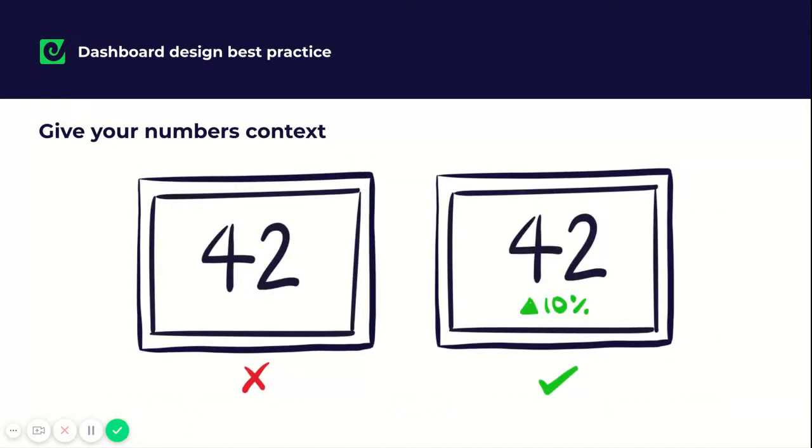Give your numbers context. Make sure that anyone viewing your dashboard can understand whether or not a number is good or bad. There are a number of features you can use within GeckoBoard to help you do this. For example, goals or status indicators and we have a number of comparison metrics you can add to your widgets.